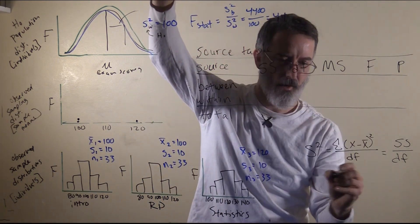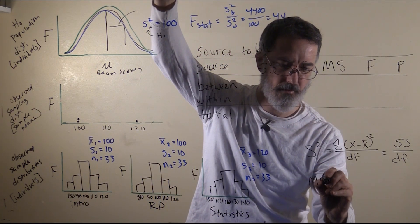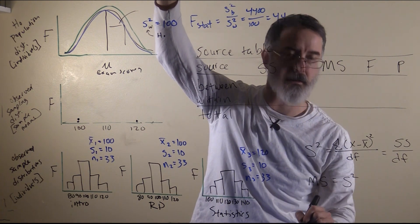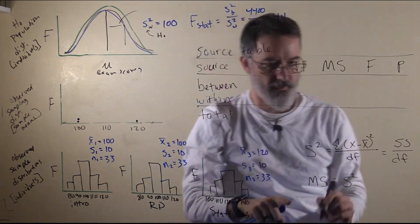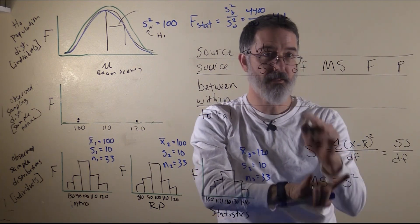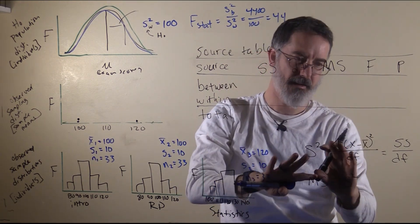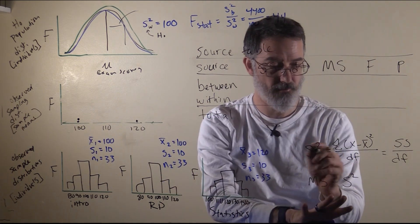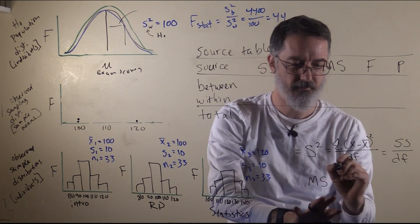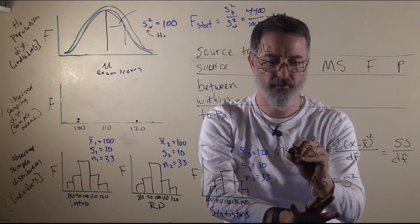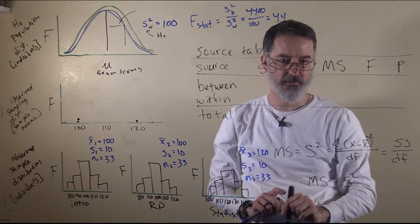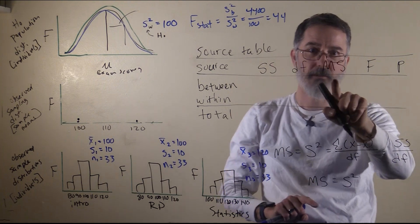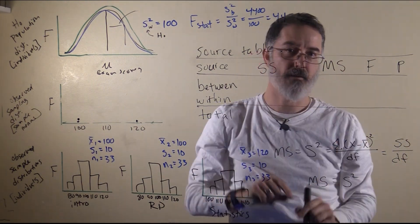The mean square actually is the same as variance. It is a little extra confusing that we are taking familiar things and putting new labels on them, but statisticians love to do that — they did not set this up for students. So the mean square is the variance, and the variance is the sums of squares divided by the degrees of freedom.